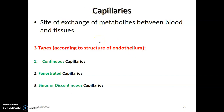Capillaries provide a site of exchange of metabolites, and they exist at tissue level. We have three types of capillaries, based mainly on the histological structure of the endothelium: continuous capillaries, fenestrated capillaries, and discontinuous capillaries, which are also called sinus capillaries.